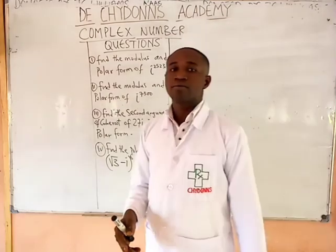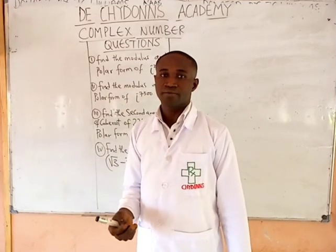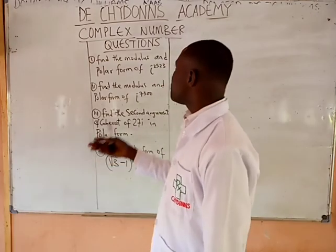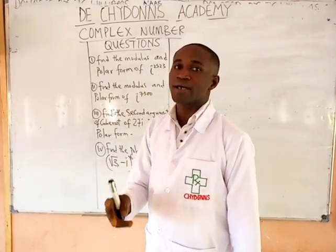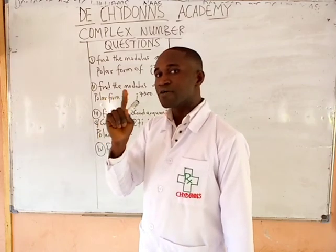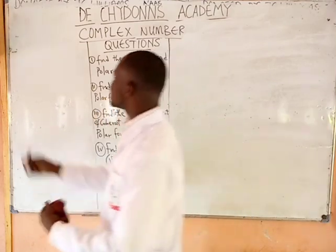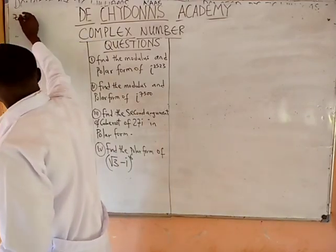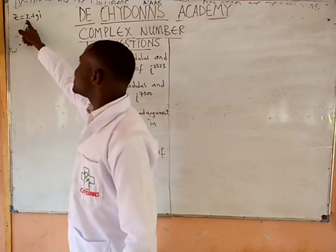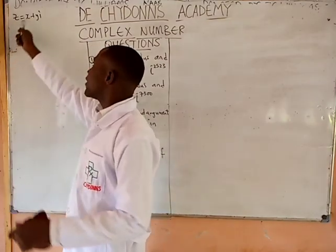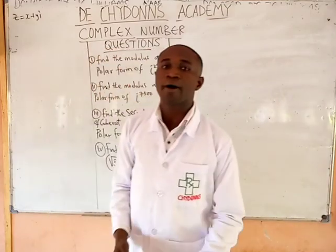Complex number — you may ask, what does it mean? It simply means a number that consists of two numbers: one, the real number, and two, the imaginary number. It is represented as z equals x plus yi, where x is the real number and yi is the imaginary number.